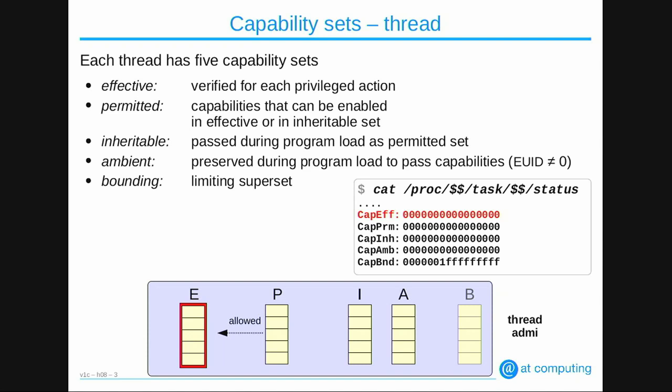For completeness, you can also see the inheritable and ambient capabilities, which I will discuss one by one in a later slide. Furthermore, you will find the bounding capabilities — that is really the limiting superset. You cannot have any bit in all the other lists if it's not in the bounding list. So if you shrink the bounding list, that also shrinks all the other lists. Usually the bounding list has all the capabilities as a possibility.